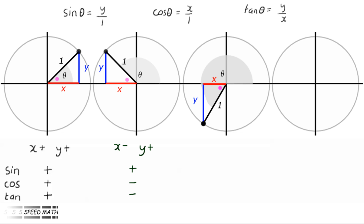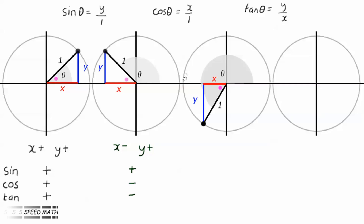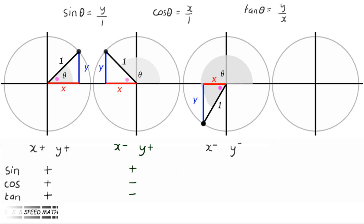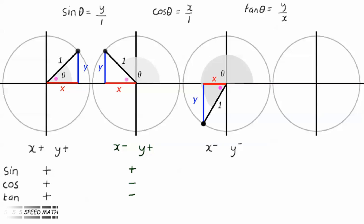Looking at the third diagram, if we rotate the radius around a bit further still so it sits in quadrant 3, the angle it represents is somewhere between 180 and 270 degrees. X is negative and y is negative. So sin theta is minus y over 1, therefore negative. Cosine theta is minus x over 1, therefore negative. Tan theta is minus y over minus x, therefore positive.